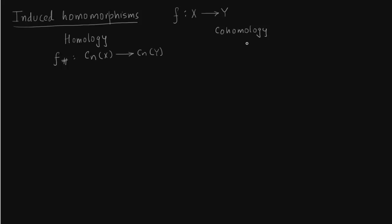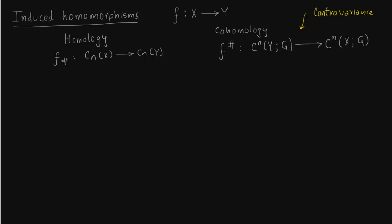Now the very important distinction in cohomology is the contravariant nature. Rather than going from X to Y, we get cohomology or co-chain maps from Y to X. The co-chain maps are nothing but homomorphisms acting on the basis. This is very important: instead of space X to Y, we are going from Y to X — the arrow has reversed. F goes from X to Y, whereas the co-chain complexes we get have maps from Y to X.